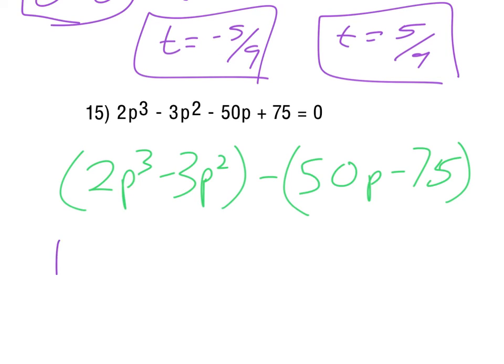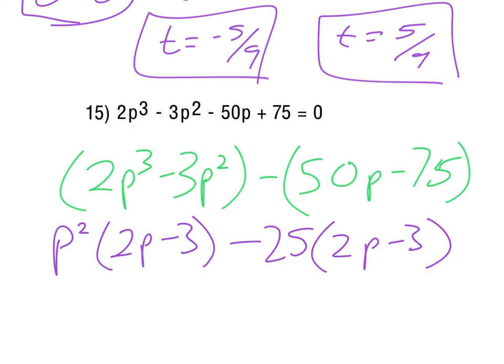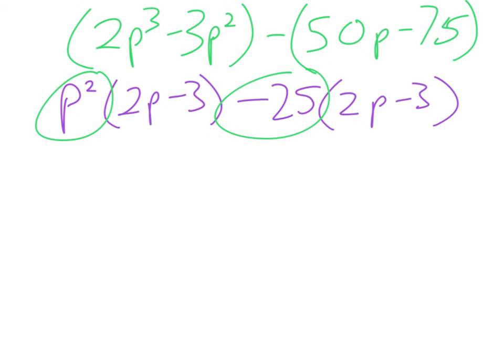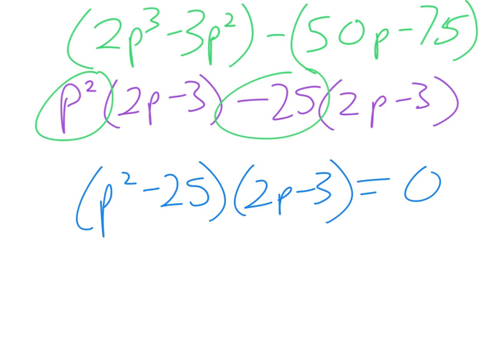Besides that, we again go back and we take out what we can. So we can take out a p² here, we get 2p minus 3. So we should get a 2p minus 3 out of this, and that will happen when we take a 25 out, and we get 2p minus 3. So again, really what we're looking at there is it's going to be p² minus 25, which, again, we should be able to recognize right away as a difference of squares. And of course it all equals 0.